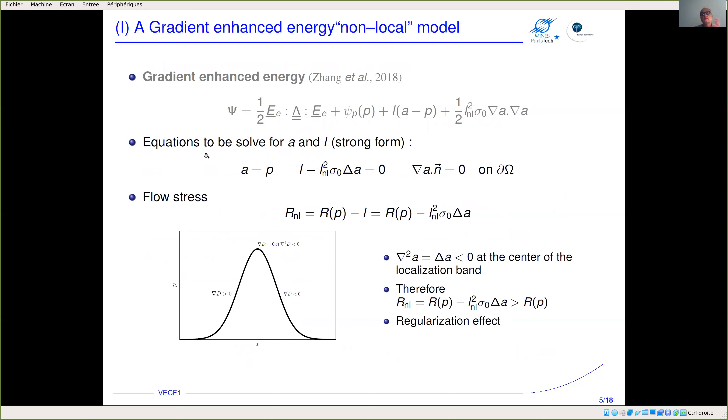If we go to the strong form, then we have a equals p, the condition we want to enforce, but we also have an equation linking the plastic multiplier λ to the Laplacian of the nodal variable a. Two important parameters: ln is a characteristic length which describes how thick the localization band will be, and sigma zero is the yield strength of the material.